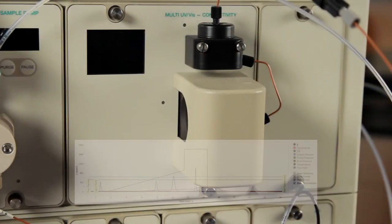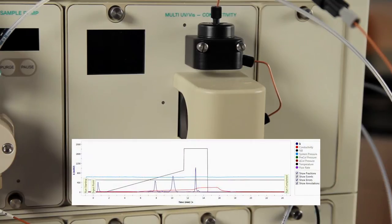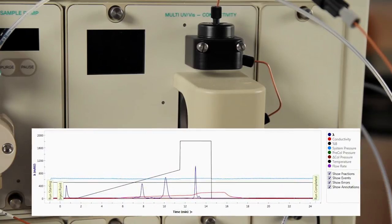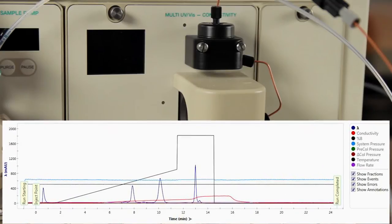Occasionally, you may notice that the UV baseline on your NGC is unstable or noisy. Very often, the drift is due to insufficient warm-up time or bubbles in the flow cell.